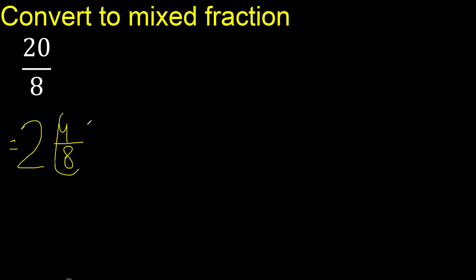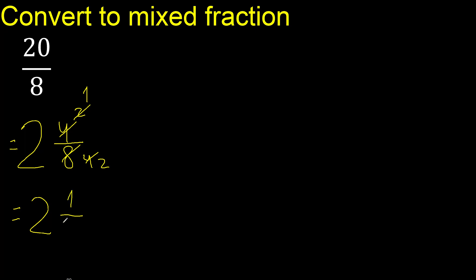Simplify, because both can be divided by the same number — divided by 2. 4 divided by 2 is 2, 8 divided by 2 is 4. Divided by 2 is 1, divided by 2 is 2. Finish.